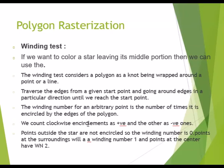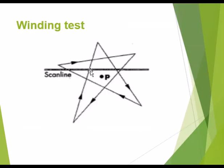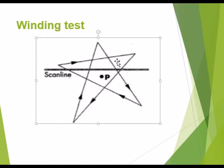We count clockwise encirclements as positive and the other as negative. Points outside the star or polygon are not encircled, so the winding number is 0. Points at the surroundings will have a winding number of 1, and points at the center will have a winding number of 2. All points in the center parts will have winding number 2, as they would be encircled twice, and points at the corners will have winding number 1. All others outside the polygon will have winding number 0.